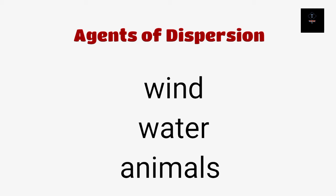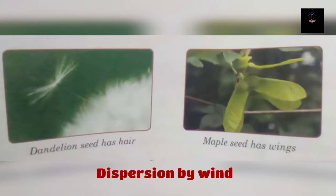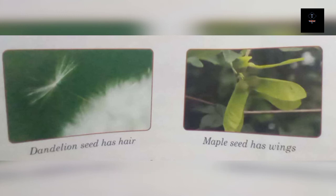Here you can see a picture showing how wind acts as an agent. For example, maple seeds have wings and are light in weight, so they can be carried by wind and dispersed in the air. They also have some hairs and are light in weight, which allows them to germinate into new plants at distant places.